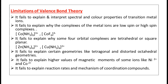The second limitation is that it fails to explain why the complexes of metal ions are low spin or high spin. Some complexes are low spin and some are high spin. For example, [Co(NH3)6]³⁺ is a low spin complex, while [CoF6]³⁻ is a high spin complex. VBT could not give any specific reason why [Co(NH3)6]³⁺ is low spin and why [CoF6]³⁻ is high spin.